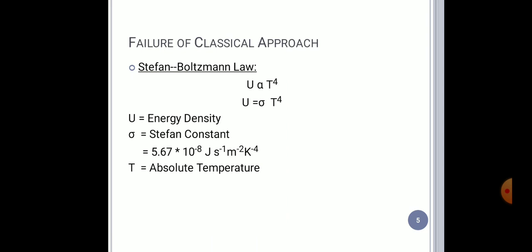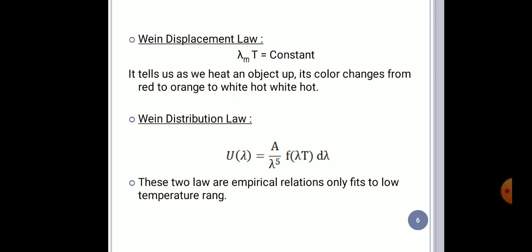Similarly, the second condition is Wien's Displacement Law and Wien Distribution Law. Wien has said that the temperature is inversely proportional to the wavelength. Temperature and wavelength maintain a constant relationship. But this condition can only explain one side of the spectrum.